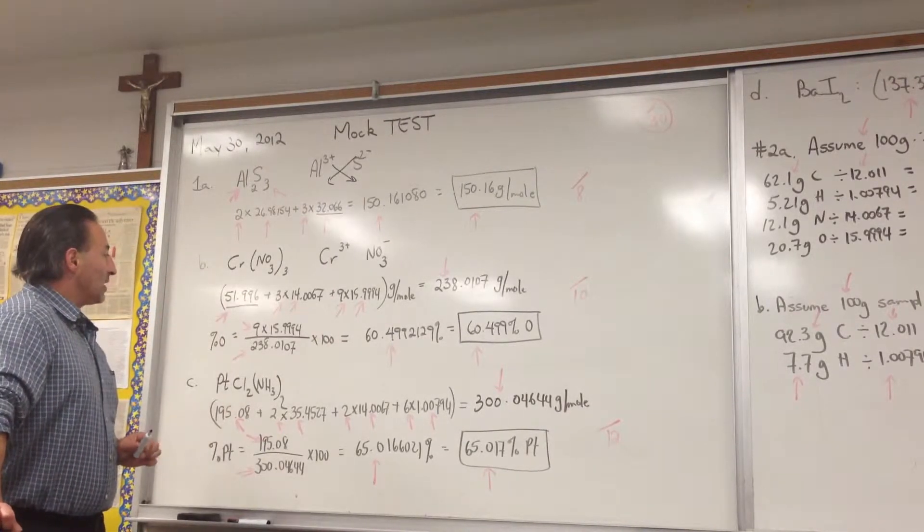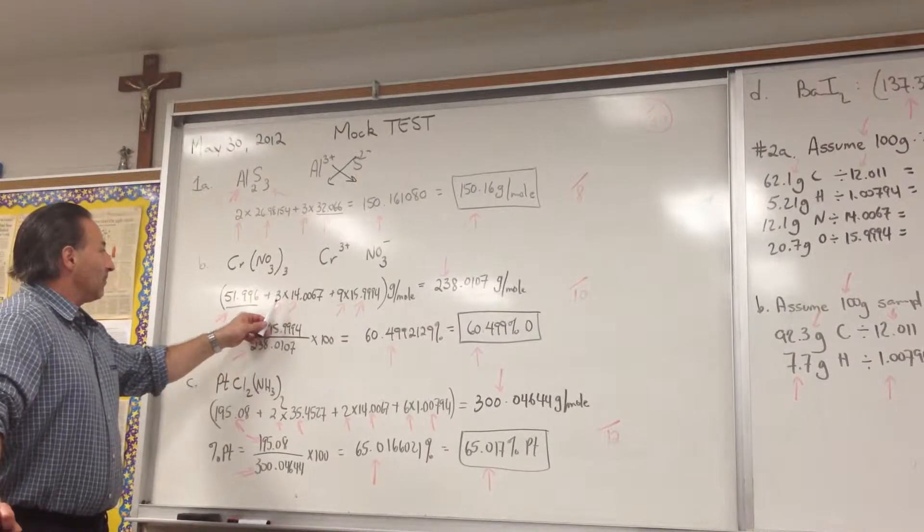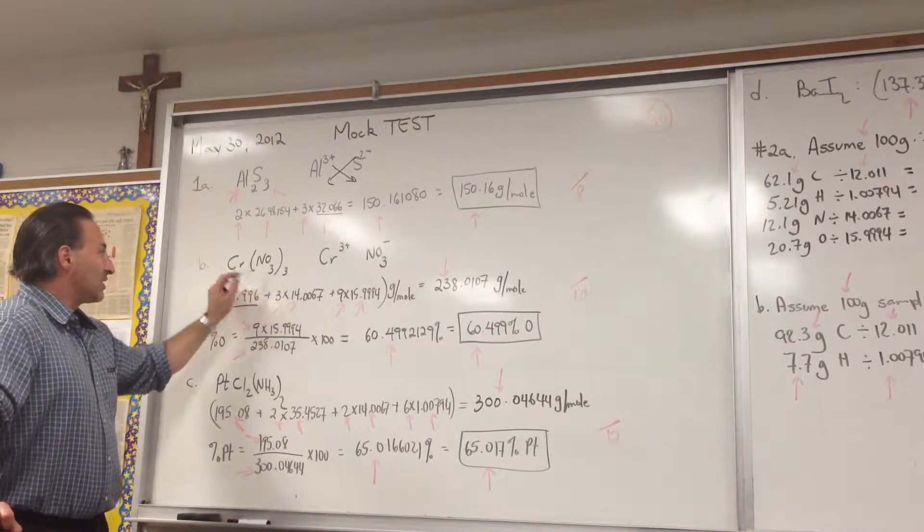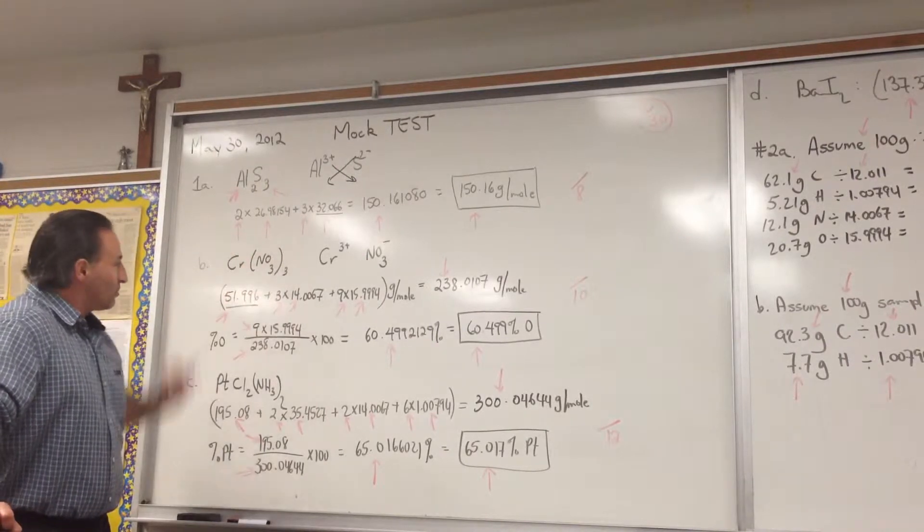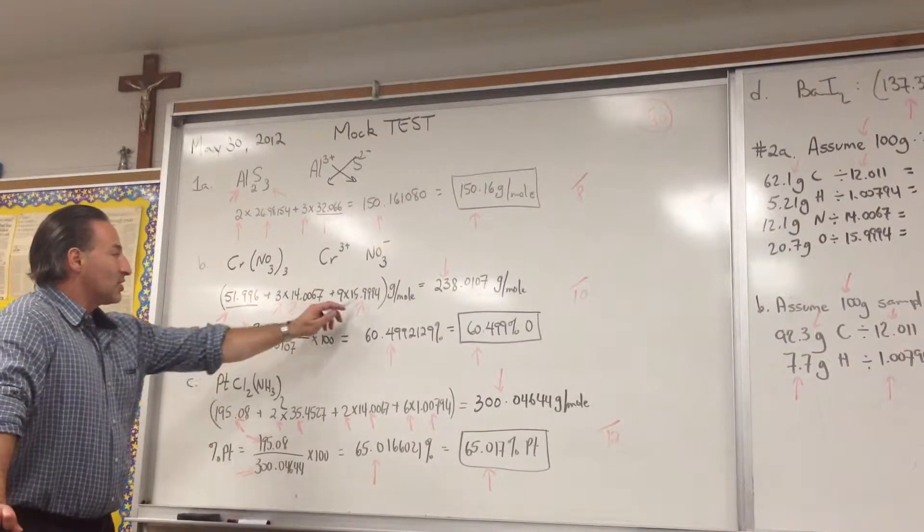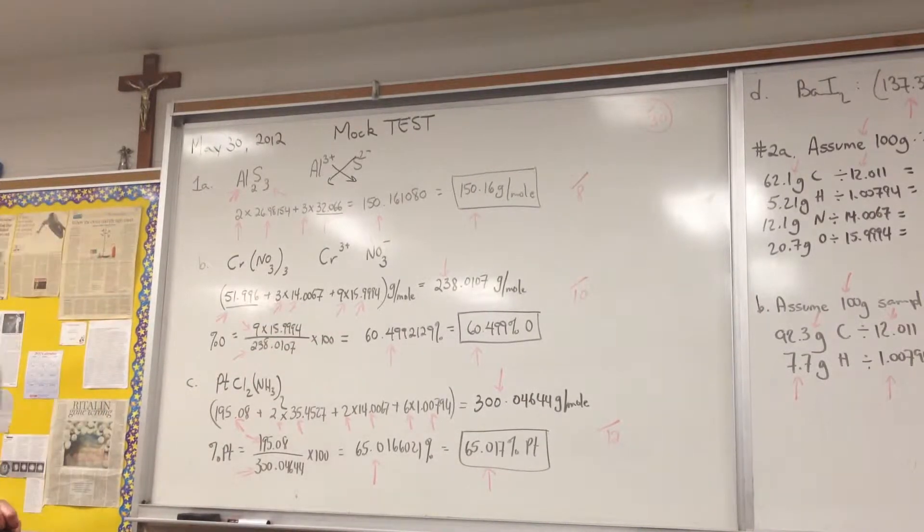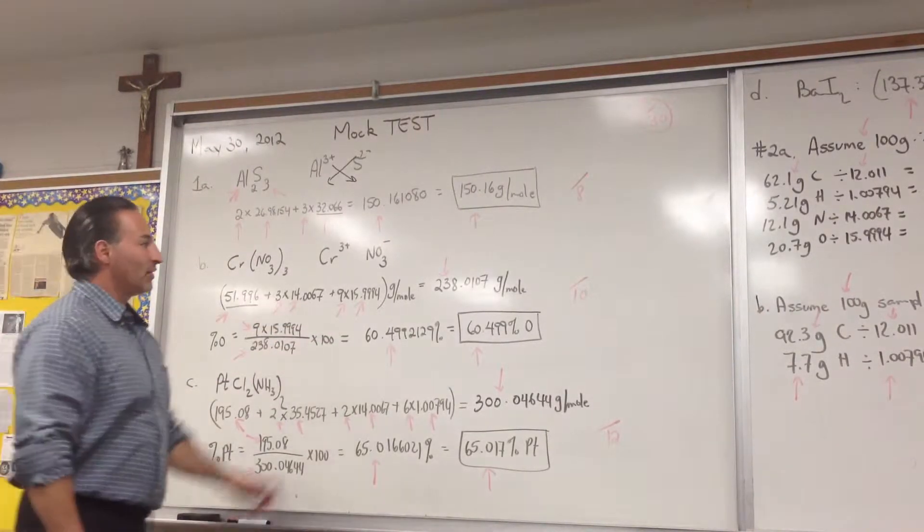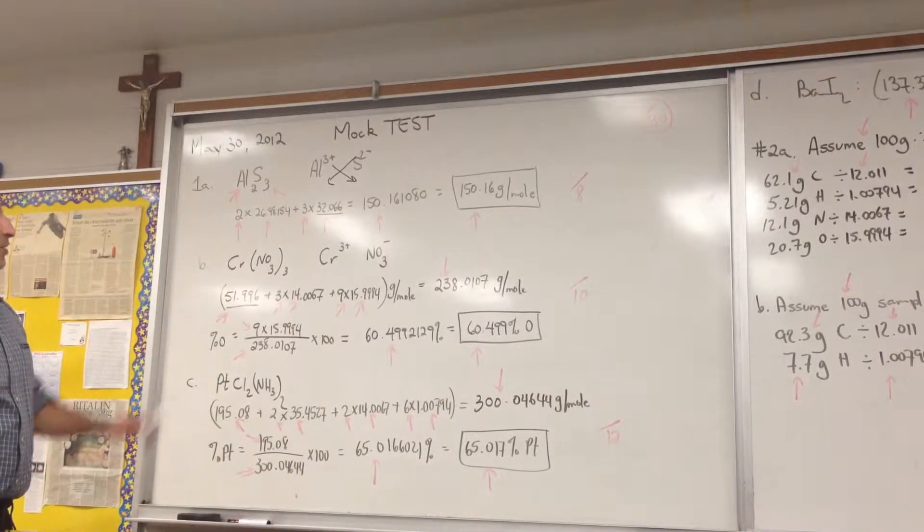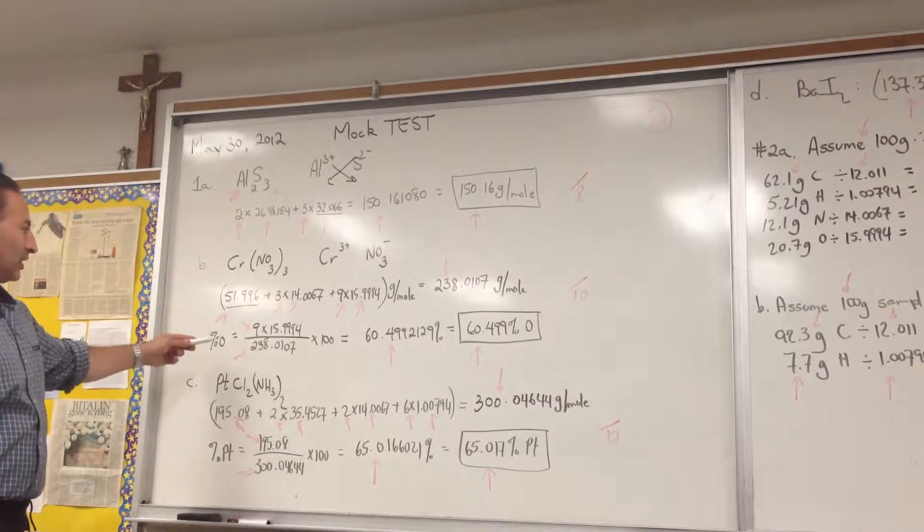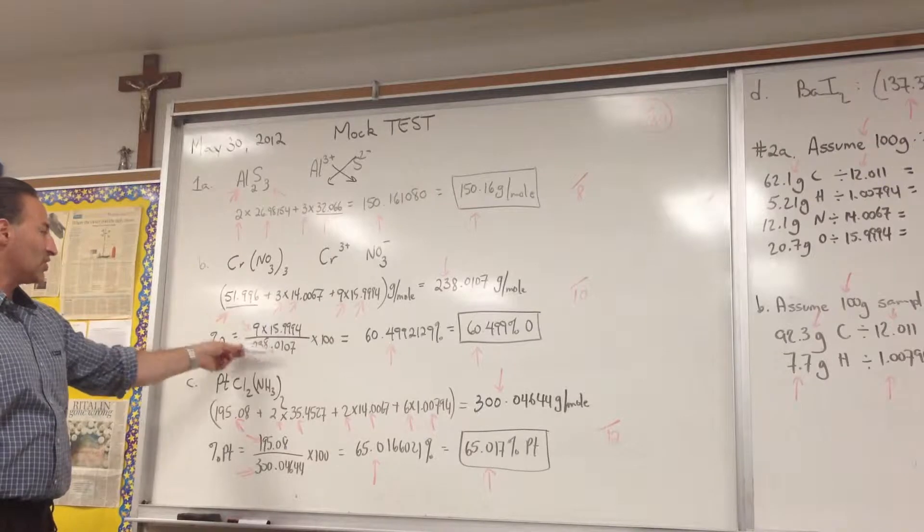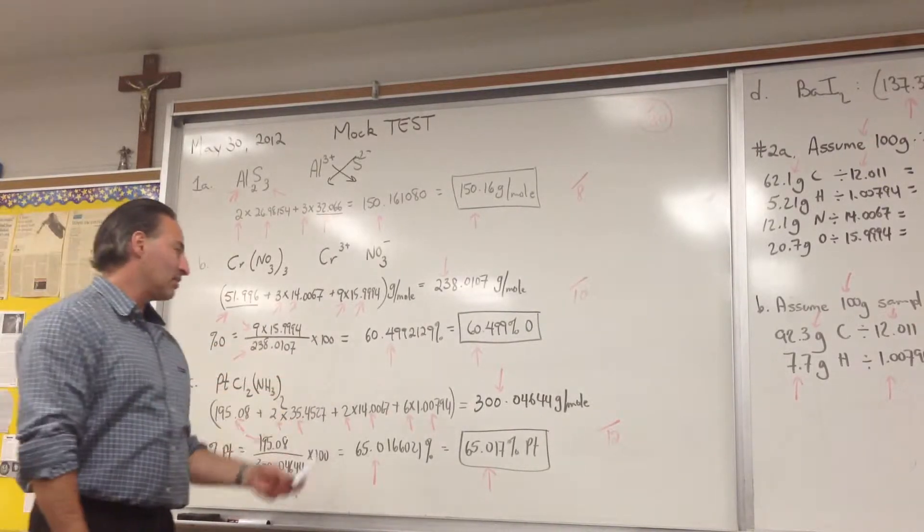So the chromium weighs 51.996, the nitrogen weighs 14.067, there's three nitrogens, that three signifies that there's three nitrates. So that means three nitrogens, and three times three oxygens, or nine oxygens, times the molar mass of oxygen, which is 15.394, total mass is 238.0107. You're not going to round it off yet because we're not finished the calculation. Percent oxygen is nine times the molar mass of oxygen divided by the molar mass of the whole substance, times 100.